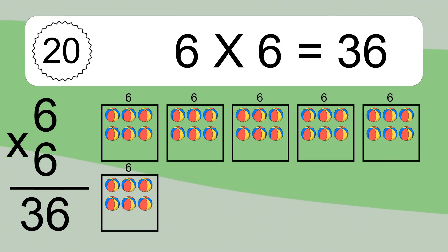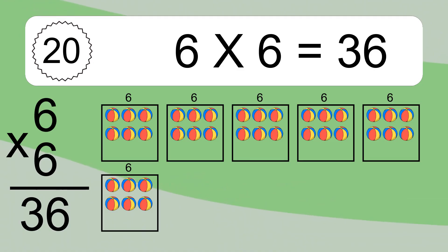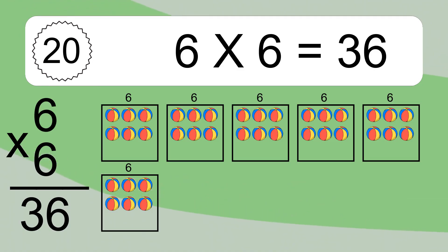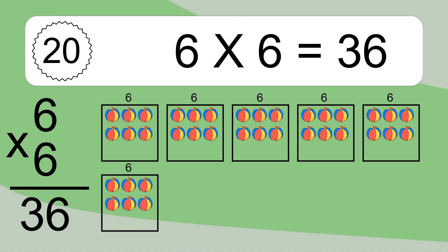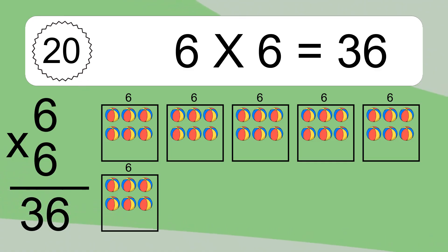We have 6 boxes, and each box has 6 colorful balls inside. If you count all the balls in all the boxes together, you will have 6 times 6 balls. This equals 36 balls.